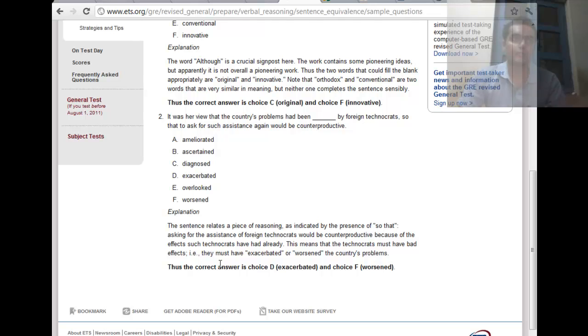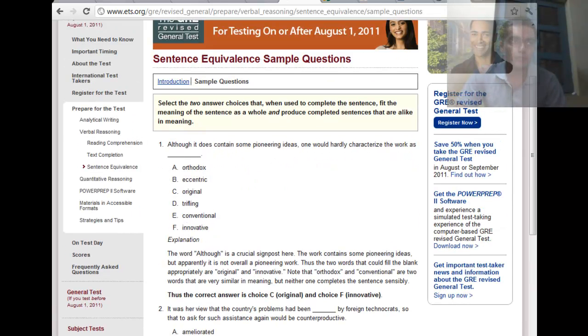Let us look at the second one. It was a view that country's problem had been dashed by foreign technocrats. So to ask for such assistance again would be counterproductive. If you are asking again their help and you think it is counterproductive means you think that the foreign technocrats are actually worsening the situation. So the right answer here is exacerbated and worsened. These are the type of questions you are going to look at.